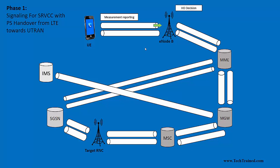Once the measurement report is received, it's up to the eNodeB to decide if a handover needs to take place. If the serving eNodeB knows its coverage is going bad for the user and decides that the SRVCC procedure needs to take place, it has to identify the target RNC and NodeB where the UE will eventually go. It will then send a Handover Required message to the MME over the S1 interface using S1AP protocol.